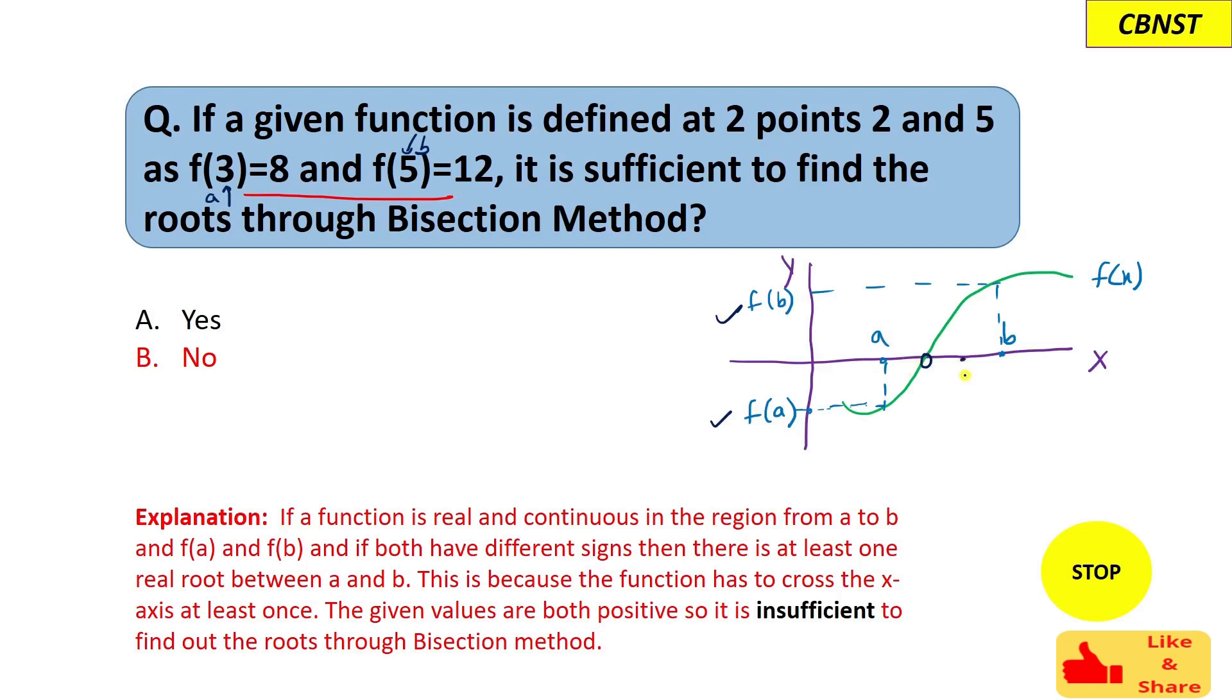So let's say we have this as 3 value and this as 5 value. So f(3) will be this value and f(5) will be this value. Between this 3 and 5, this function is not crossing this x-axis, that means there cannot be any root between 3 and 5 range.